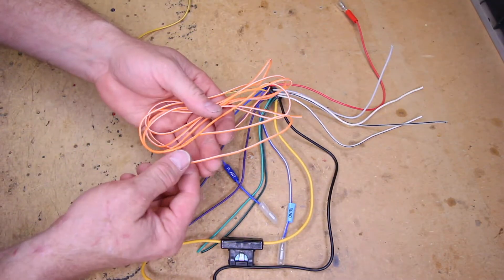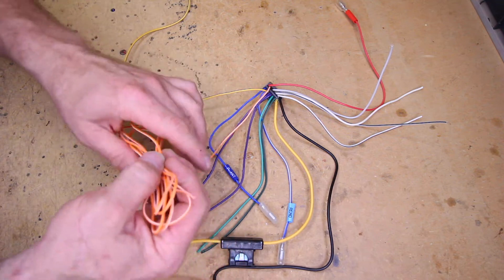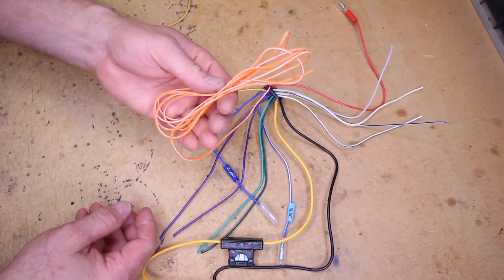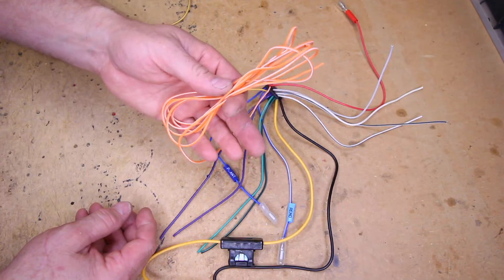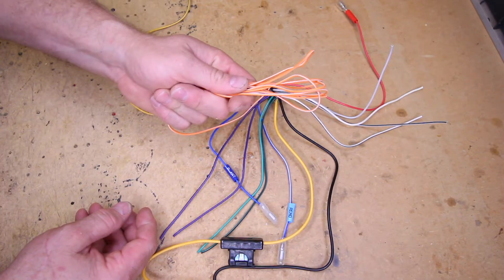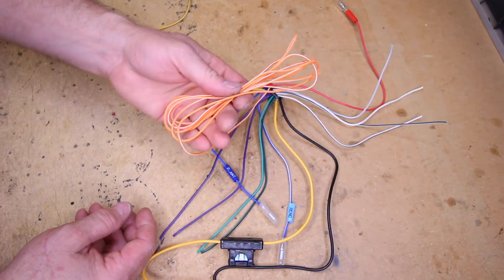Now, let's take a look at the orange white. Orange white is where Alpine is different than everybody else. Everyone else likes to use orange white as an illumination. All the harnesses you buy are going to have orange white as illumination.